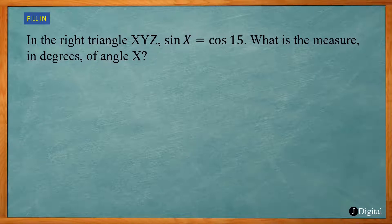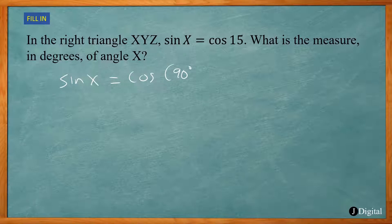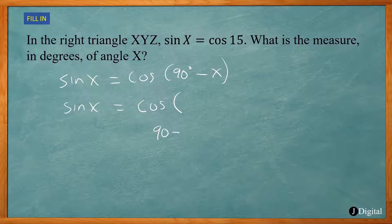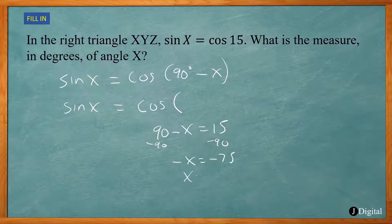This is another fill-in question. In right triangle XYZ, sine of x equals cosine of 15. What is the measure in degrees of angle x? Using the co-function identity: sine x equals cosine of (90 degrees minus x). So 90 minus x equals 15. Subtracting 90 from both sides gives negative x equals negative 75, so x equals 75.